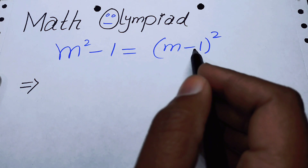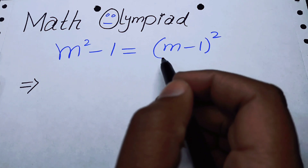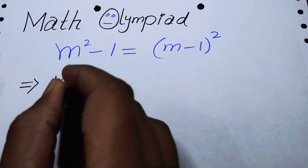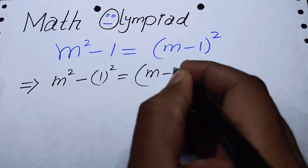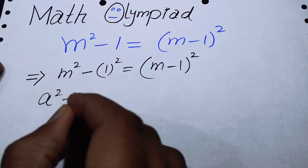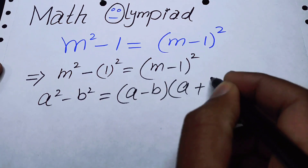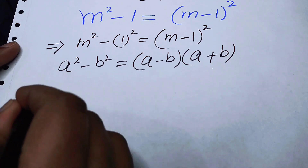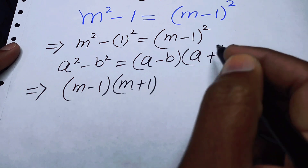It is equal to m minus one whole square, so we can solve this for the value of m. We first simplify our left hand side and write it as m squared minus one squared is equal to m minus one whole square. Now we apply the famous identity: a squared minus b squared is equal to a minus b times a plus b. Applying this identity to the left hand side, it becomes m minus one times m plus one.